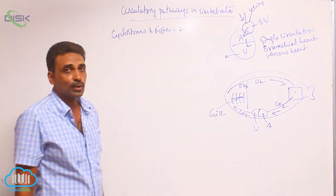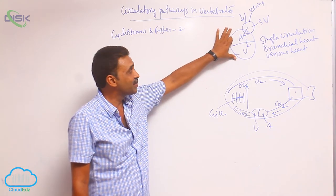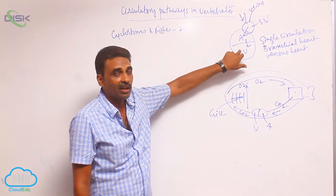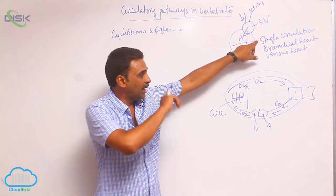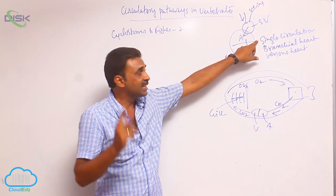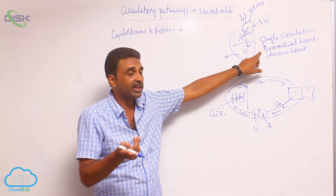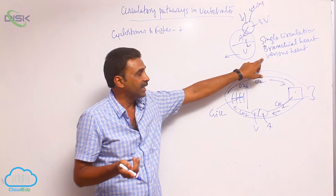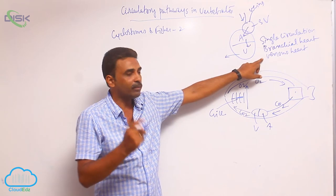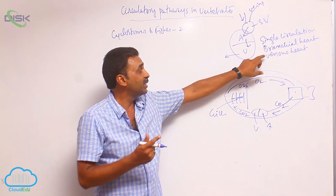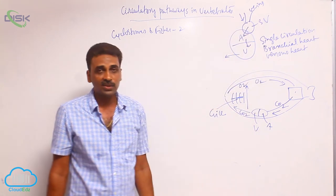In summary, in cyclostomes and fishes, a two chambered heart is present with one atrium and one ventricle. There is single circulation - blood passes through the heart once in a single circuit. The heart pumps blood to the gills, so it is called a branchial heart. It always pumps deoxygenated blood, so it is called a venous heart, and the pacemaker is the sinus venosus.